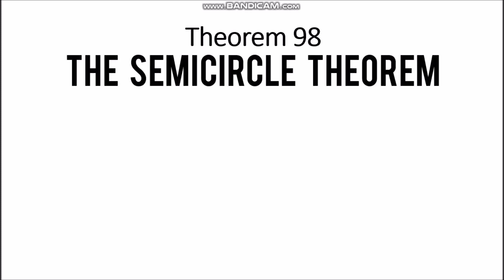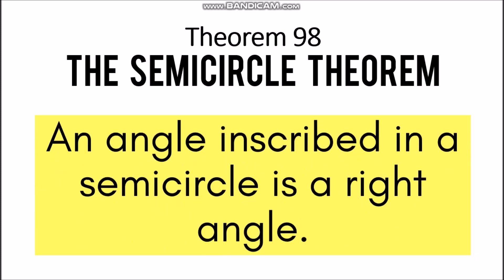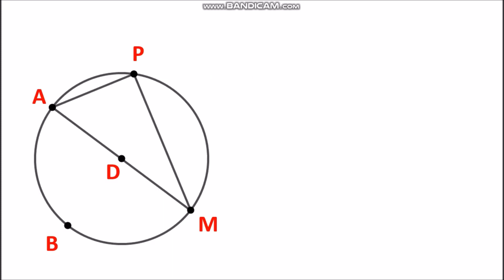For today's lesson we will be discussing more theorems, which are Theorem 98, 99, and 100. We will start with Theorem 98, which is the Semicircle Theorem. It states that an angle inscribed in a semicircle is a right angle. So whenever we have an angle inscribed in a semicircle, that angle is a right angle or it measures 90 degrees.